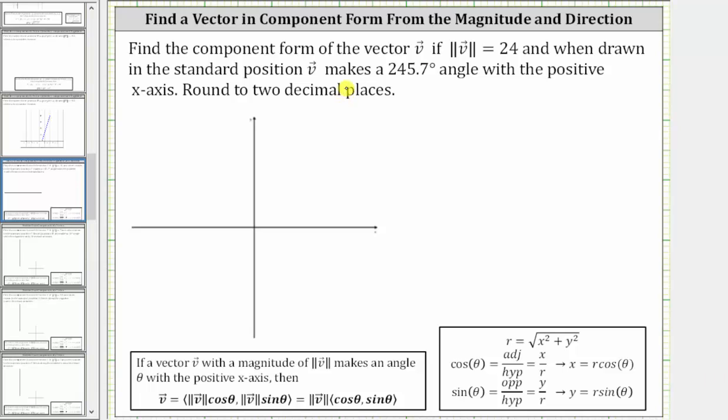We're asked to find the component form of the vector v if the magnitude of vector v equals 24, and when drawn in standard position, vector v makes a 245.7 degree angle with the positive x-axis. We're told to round to two decimal places.